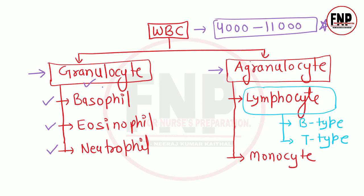WBC ka normal count 4000 se 11000 ke beech hota hai - yeh important hai, exam mein kai baar puchha gaya hai. WBC ke doosre type agranulocytes mein lymphocyte aur monocyte hote hain. Lymphocyte ke do prakar hain: B type aur T type. B type lymphocyte cells humoral immunity provide karaati hain. Yeh chart important hai - aap chahein toh iska screenshot le lein.